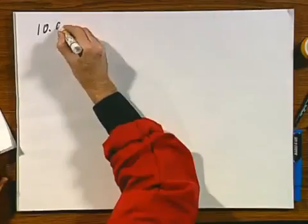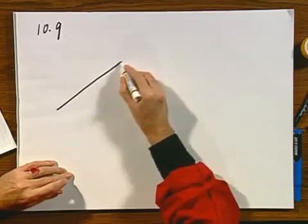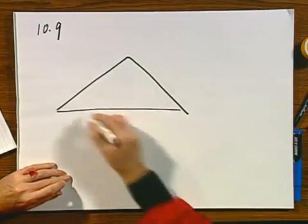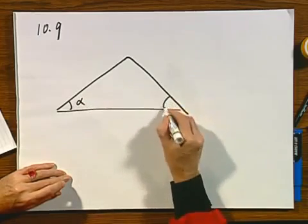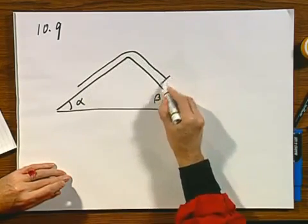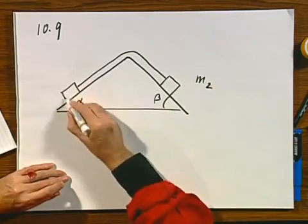So let's now go to problem 10-9. This is a classic. I have here an angle alpha, and here an angle beta, a rope, and here I have a mass m2, and here I have a mass m1.